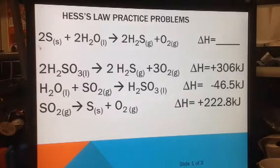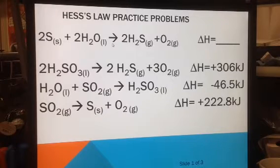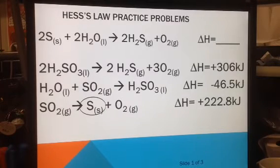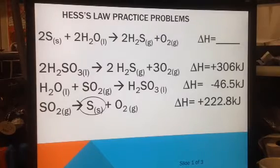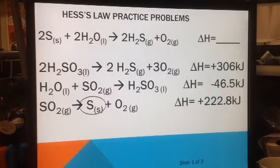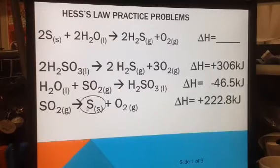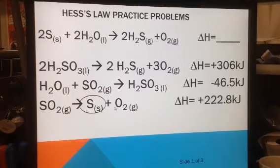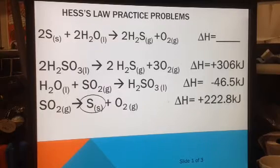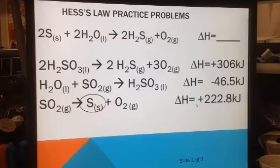sulfurs, and they need to be on the reactant side of the equation. So here are the sulfurs. They're on the product side, so that means I'm going to have to flip that equation, and there's only one of them, which means I'm going to have to multiply each piece in this equation by two, including the delta H, and when I flip it, the sign on the delta H also flips.